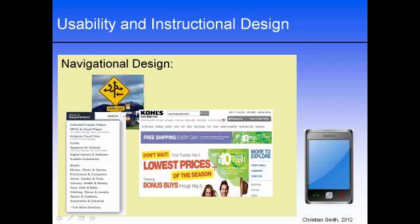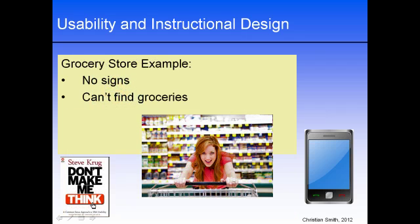In Steve Krug's book Don't Make Me Think, he points out that navigating any kind of interface is a lot like shopping at a grocery store. Pretend that you walked into a grocery store only to find there were no signs to identify where certain groceries are found. As a shopper, you would not know where to begin to find the items on your grocery list. You would have to start wandering around, hoping to randomly run into the groceries that you need. This would especially be difficult if the groceries were not organized in a logical fashion, making it annoyingly time consuming to fill up your cart.